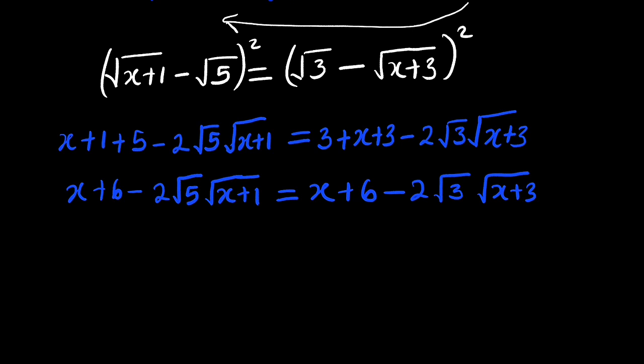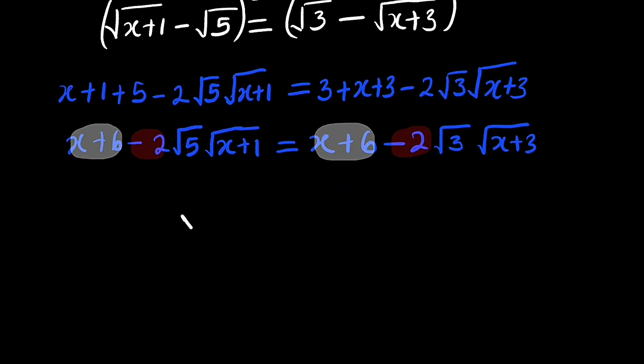Let's perform a cancellation here. You can see that x plus 6 will cancel x plus 6 if you subtract them from both sides. And also, if you divide both sides by negative 2, this negative 2 will take care of this negative 2. So what do you have left? We have root 5 multiplied by root of x plus 1. And this is equal to root of 3 multiplied by root of x plus 3.